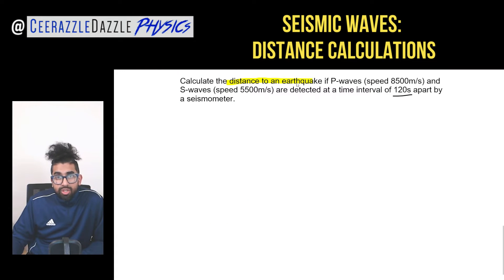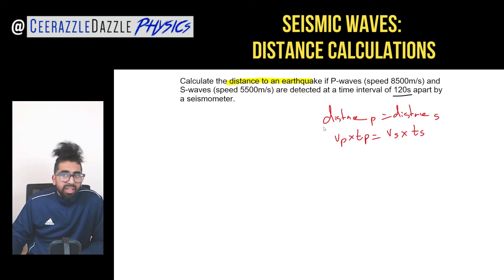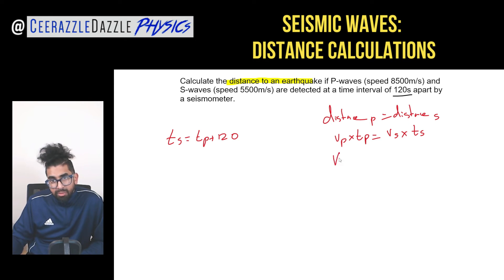The question: calculate the distance to an earthquake if P waves of speed 8500 m/s and S waves of speed 5500 m/s are detected 120 seconds apart by a seismometer. Step one: write down that distance of P wave equals distance of S wave, so Vp × Tp = Vs × Ts. The interval is 120 seconds, so Ts = Tp + 120. Substituting: Vp·Tp = Vs(Tp + 120).